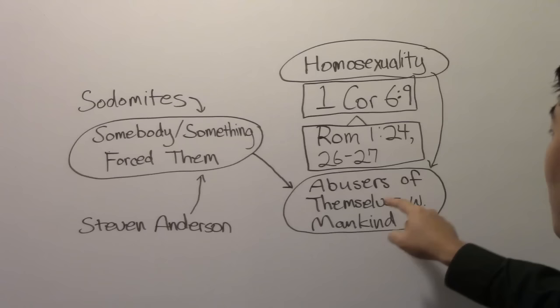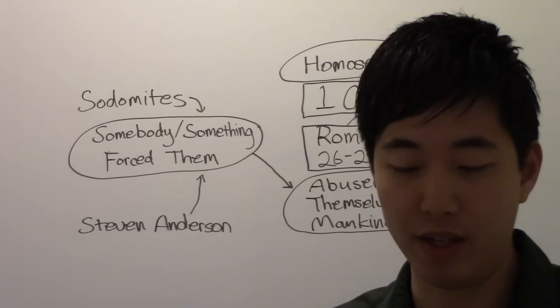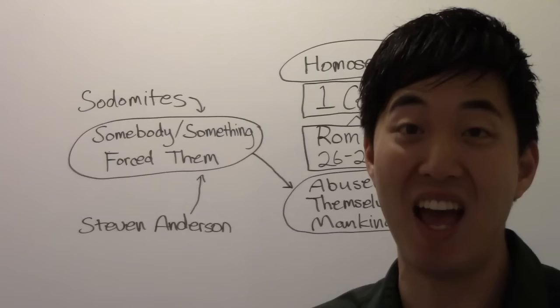But the Bible shows you what abusers of themselves with mankind is. Romans chapter 1, Stephen Anderson's favorite passage against homosexuality. Wherefore God also gave them up to uncleanness through the lust of their own hearts to dishonor their own bodies between themselves. Isn't that abusers of themselves with mankind?